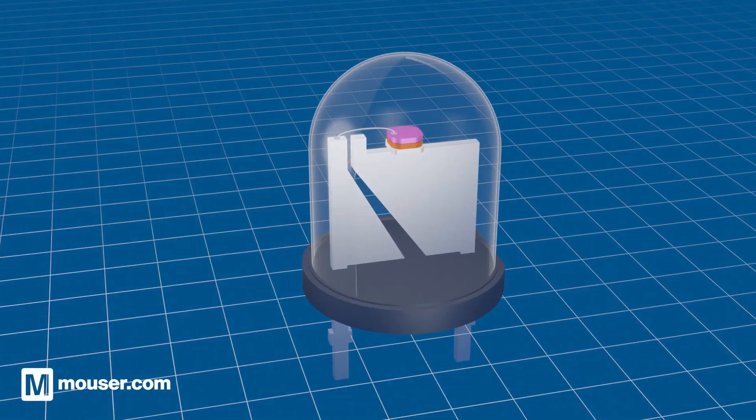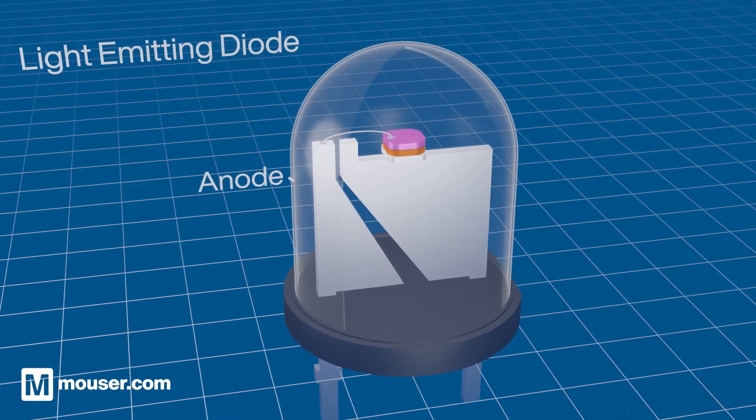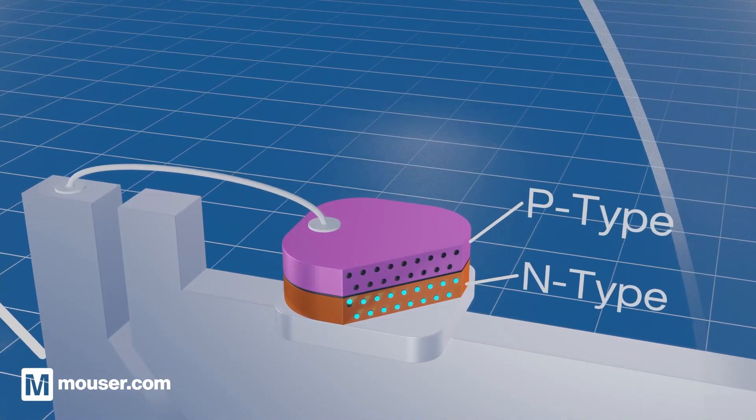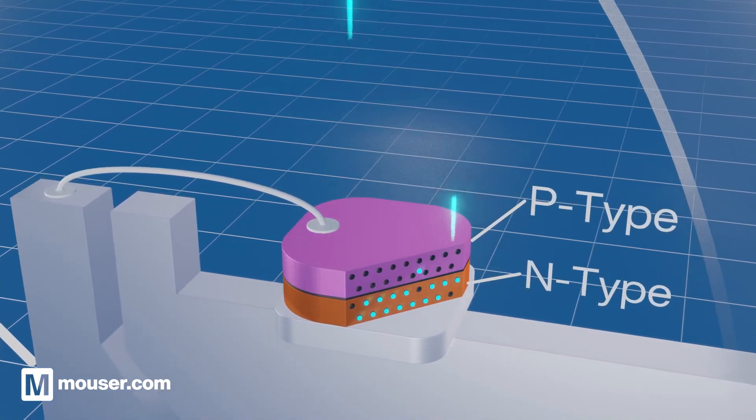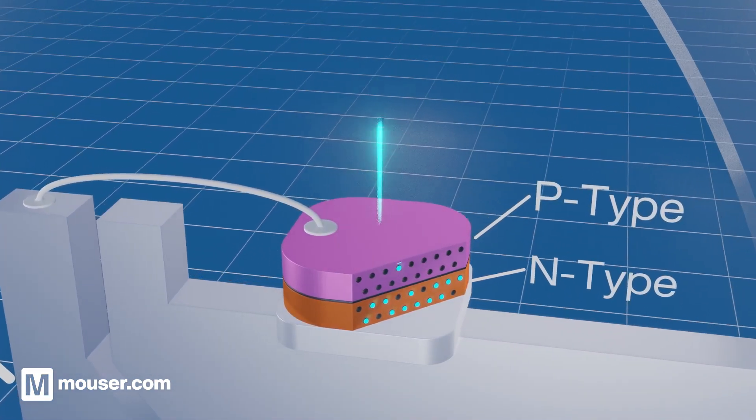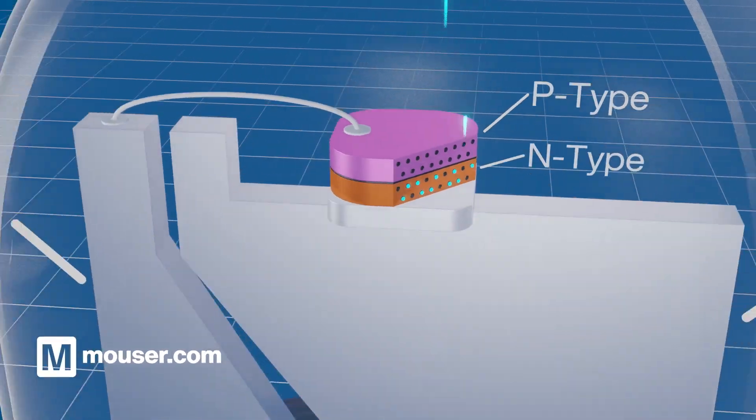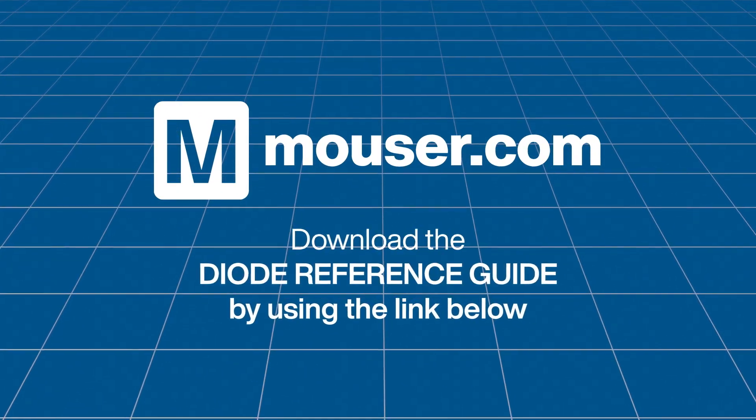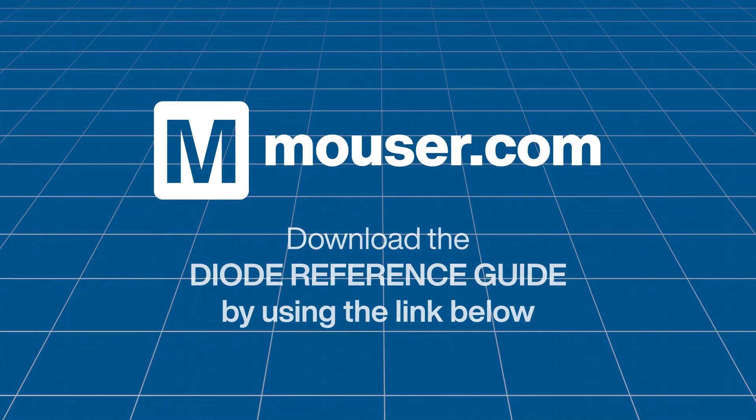The diode you will see most is the light emitting diode or LED, emitting wavelengths from infrared to near ultraviolet, providing a robust, low-cost, low-power consumption light source used everywhere from street lights to TVs. Find out more about diodes and their applications. Download the diodes reference sheet at mouser.com.